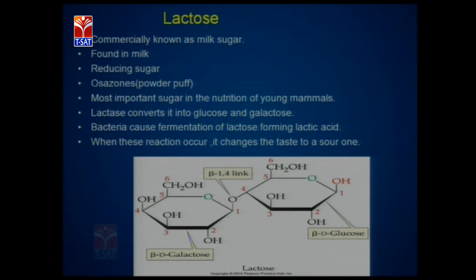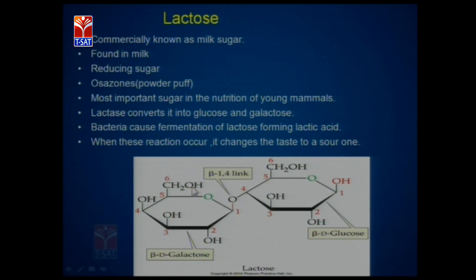Lactose is a milk sugar and a reducing sugar; it forms powder-puff shaped osazones. It is the most important sugar in the nutrition of young mammals, that is, infants. Lactase degrades lactose into glucose and galactose. Lactose is composed of beta-galactose and glucose with a beta-1,4 linkage — meaning the 1st carbon of galactose is linked to the 4th carbon of glucose.